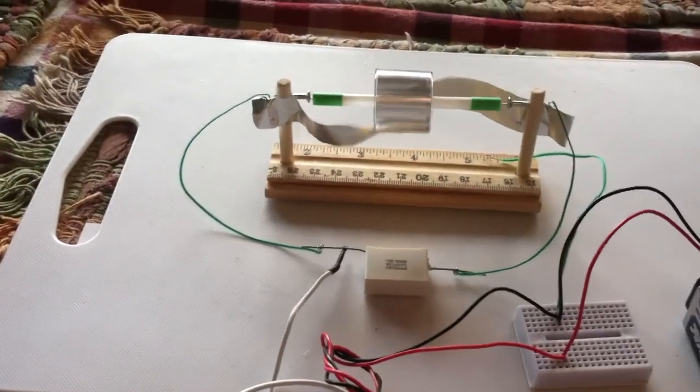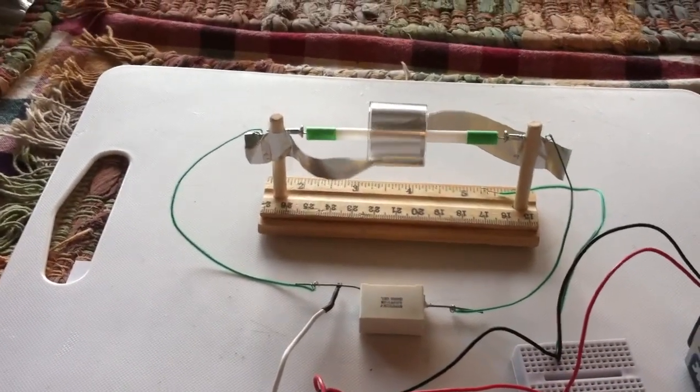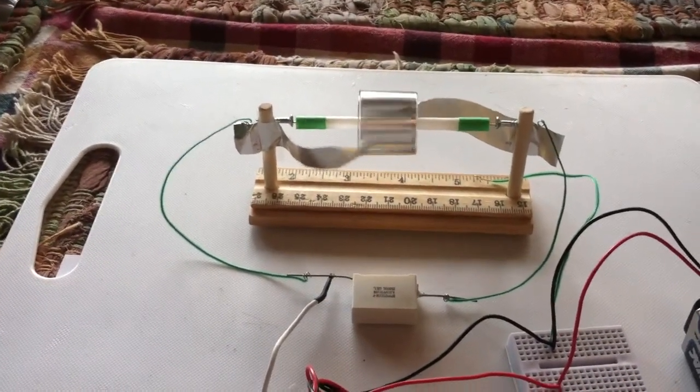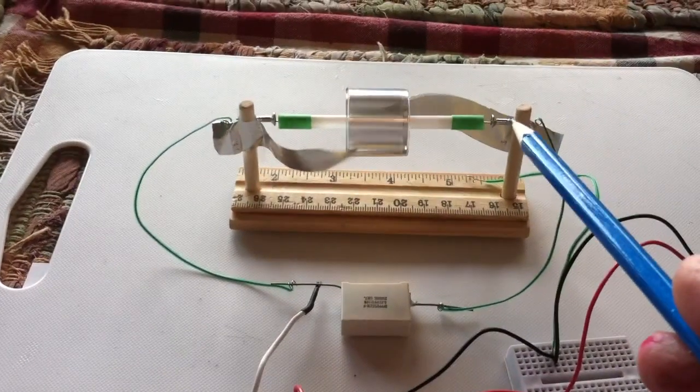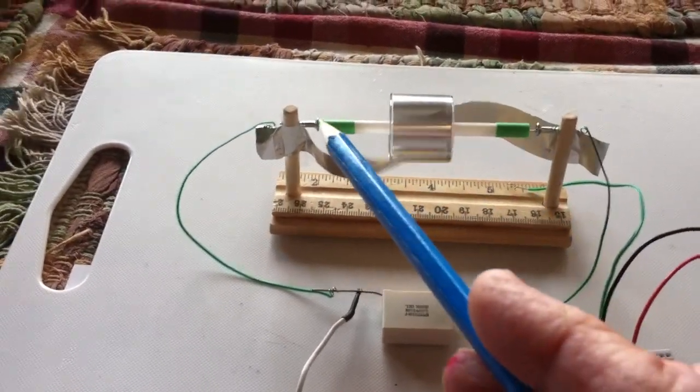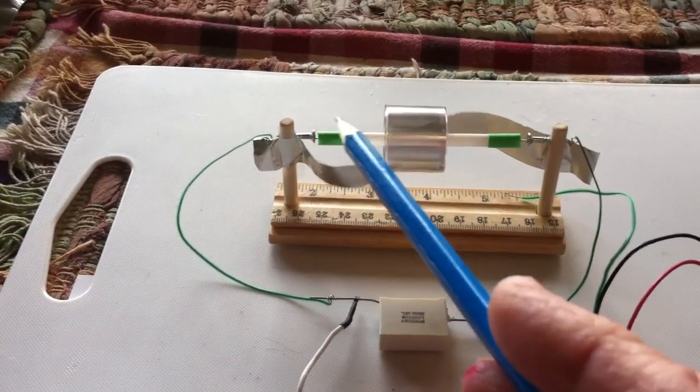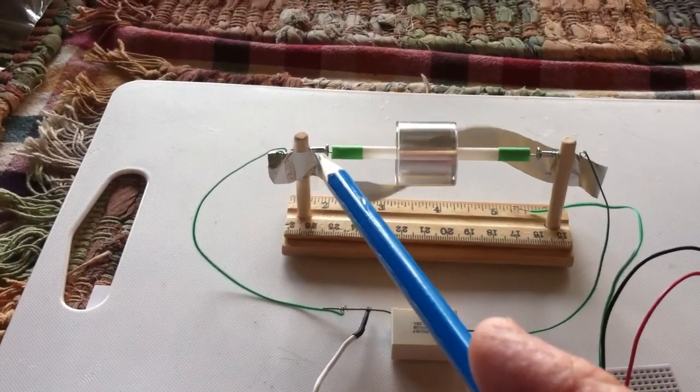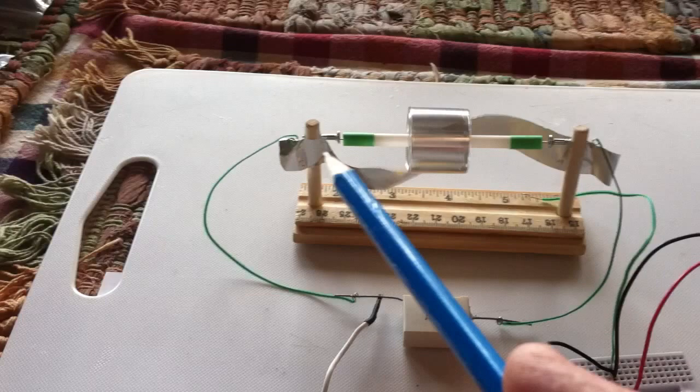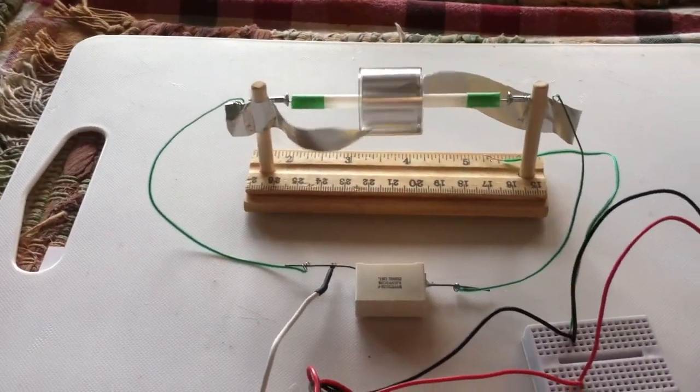Most of my electrostatic motors, I had to run them vertically because of the friction and the balance and stuff. But with this needle in a steel screw, the needle is hardened and the steel is softer so it actually makes a pretty good bearing.